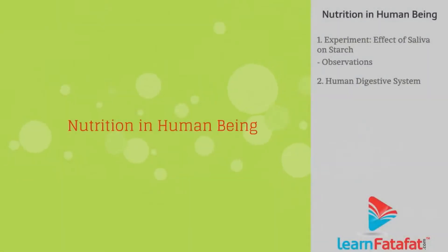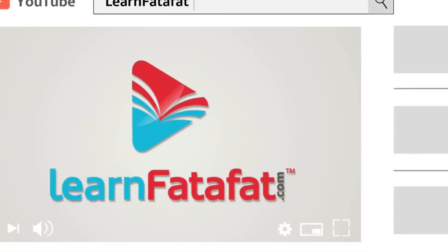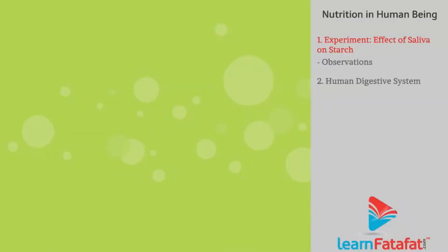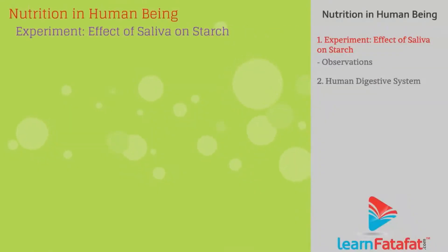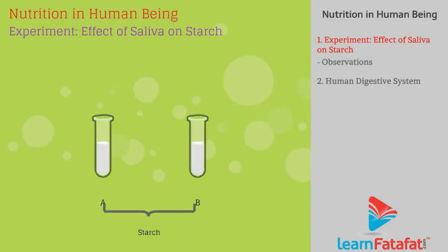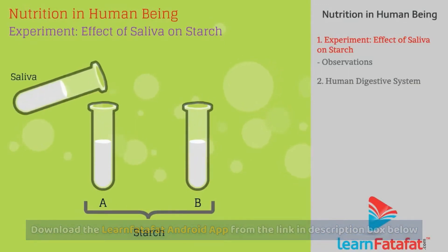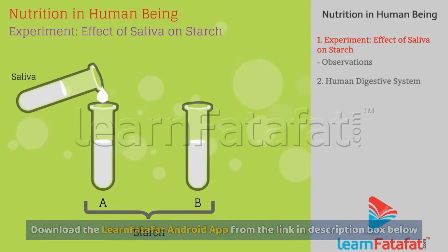Nutrition in Human Beings. Experiment: Effect of Saliva on Starch. Take 1 ml starch solution in test tube A and B. Add 1 ml saliva in test tube A.